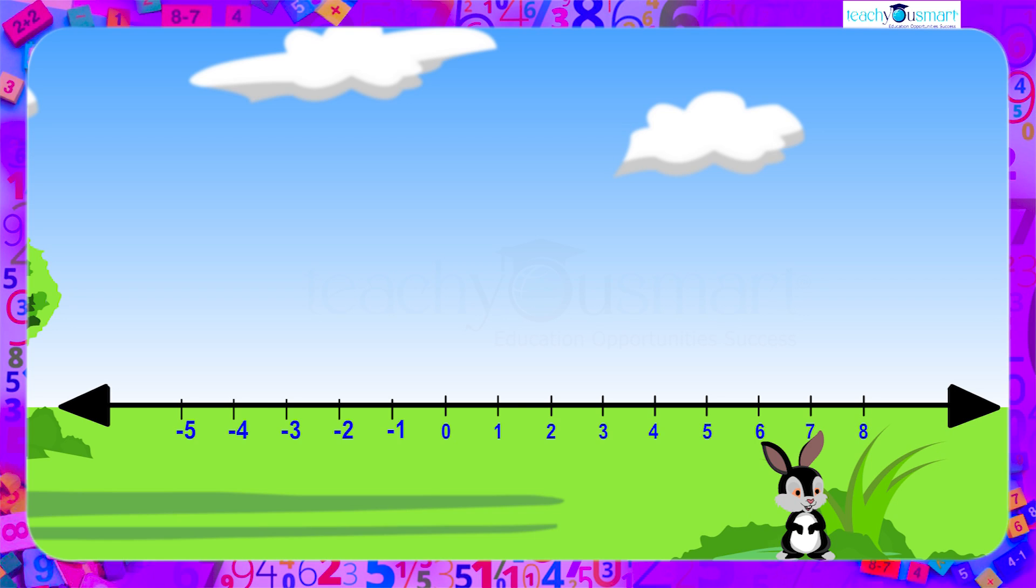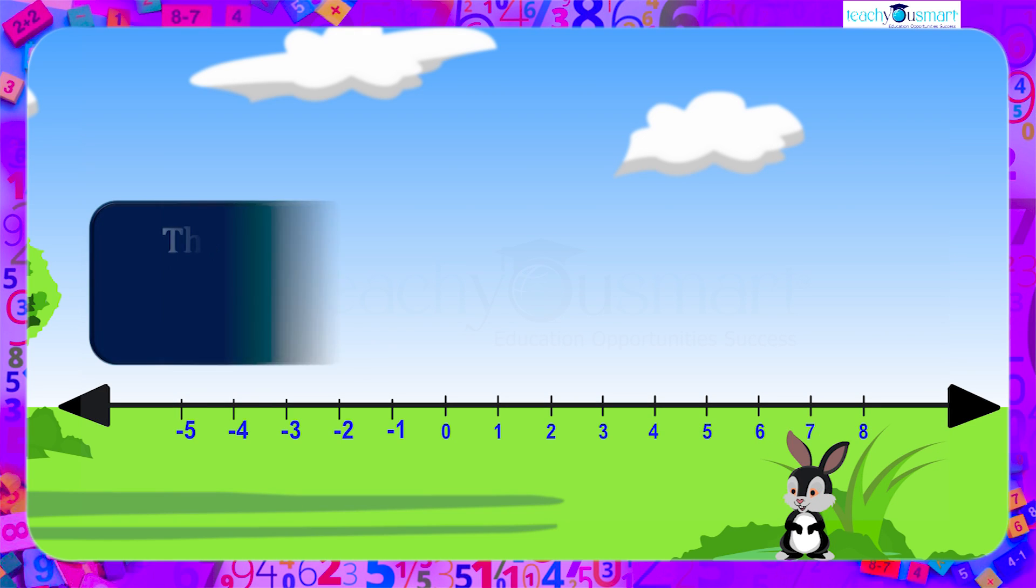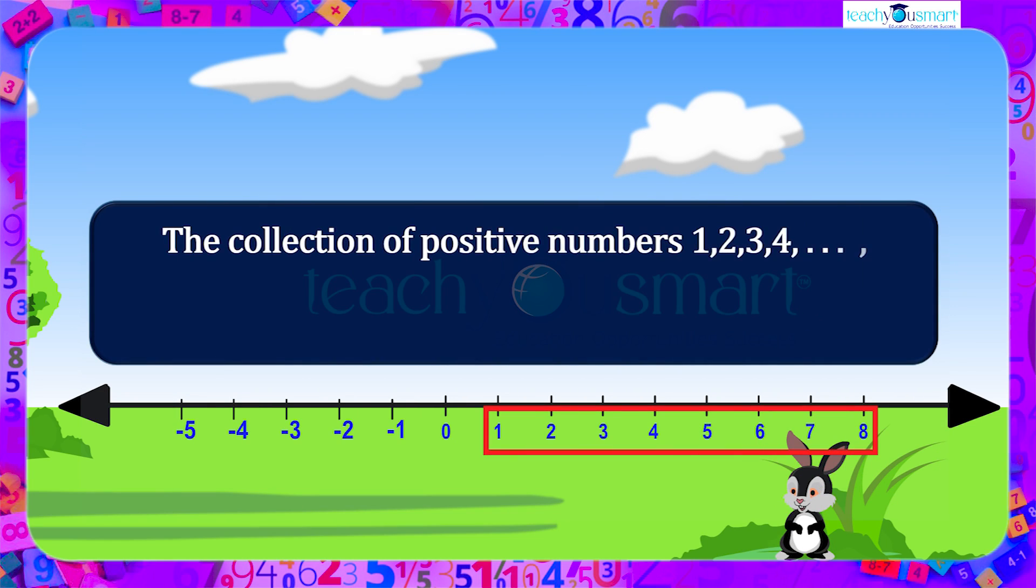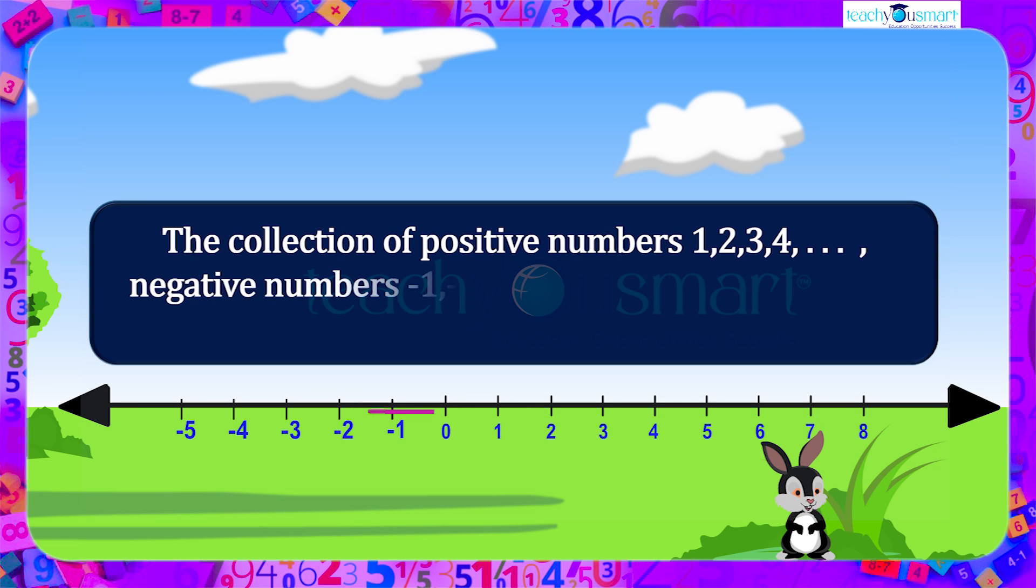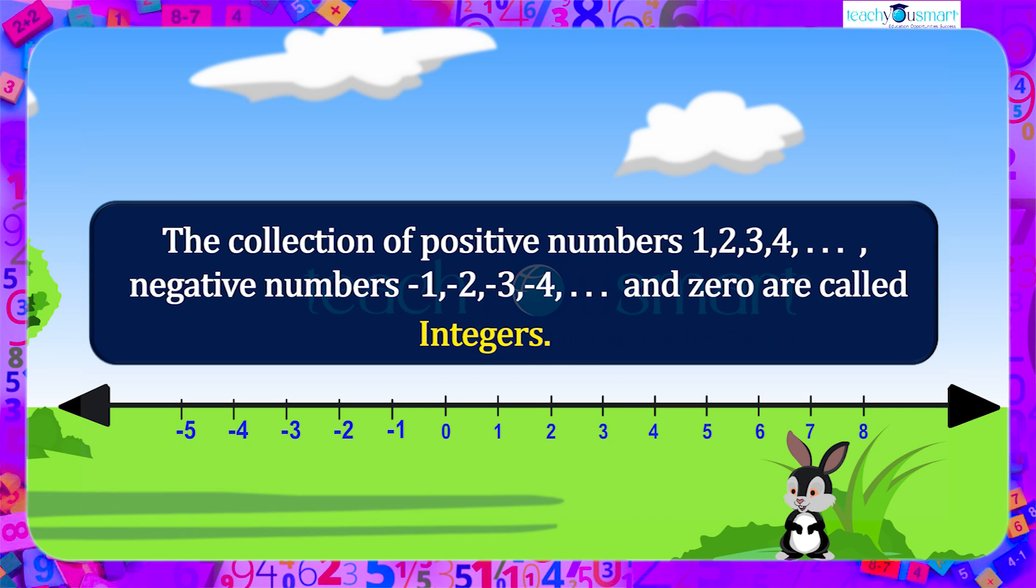Let's come back to our number line. The collection of positive numbers 1, 2, 3, 4, etc., negative numbers minus 1, minus 2, minus 3, minus 4, etc., and 0 are called integers and denoted as Z.